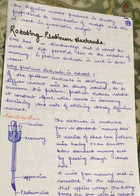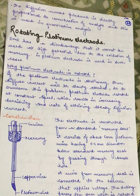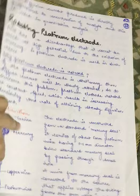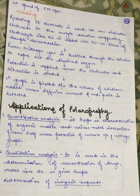The rotating platinum electrode consists of a standard mercury seal with about 5 mm of platinum wire having a 0.5 mm diameter, passed through a small hole below the mercury seal. A wire from the mercury seal is connected to the voltage source, and the tubing stem is rotated at a speed of 600 rpm.